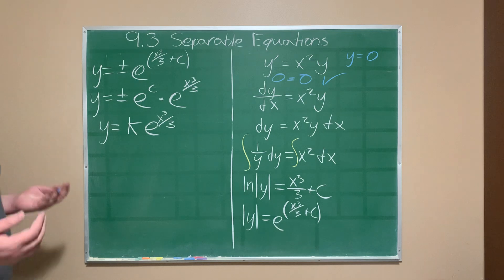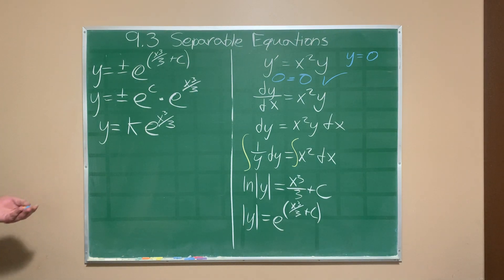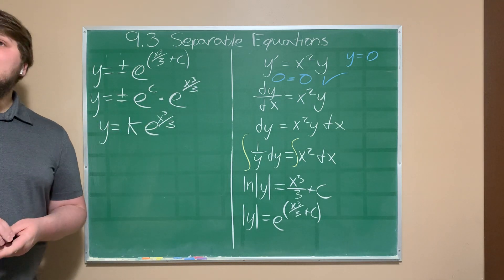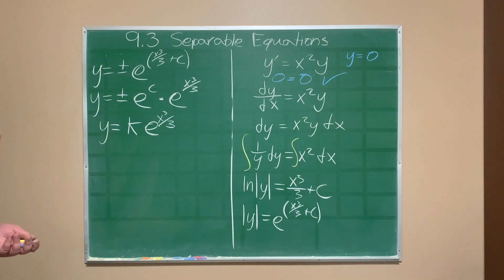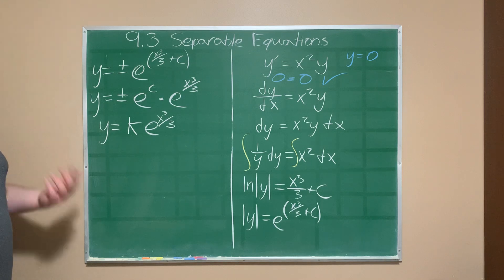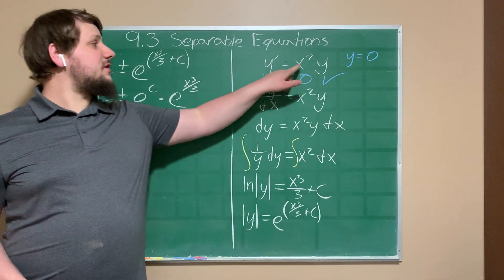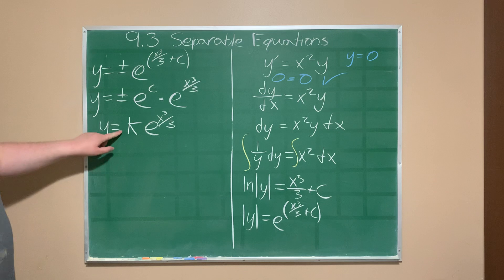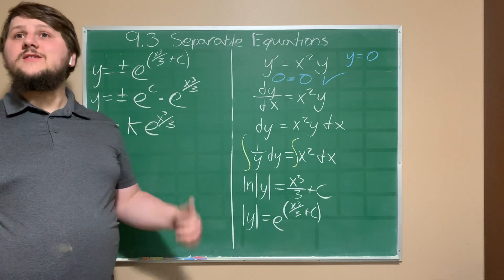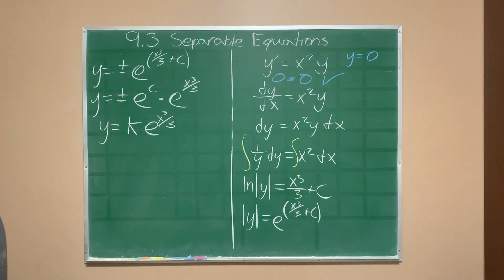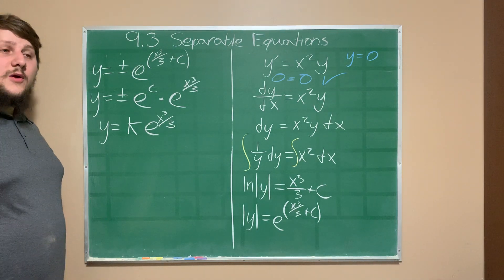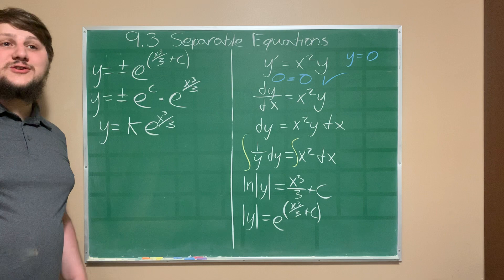In all of these solutions we have a constant of integration somewhere in the solution, meaning there is not only one solution to a differential equation but what we call a family of solutions. Any value of k gives a valid solution to the original equation — take its derivative, multiply by x², and you'll get the same value back. In the next video we'll start talking about orthogonal trajectories, one application of differential equations.